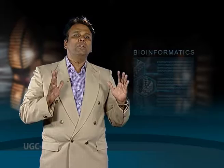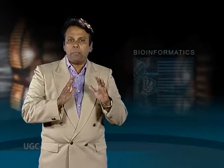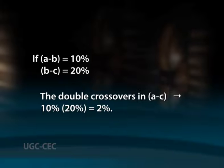If three genes have an order A, B, C and the recombination values A-B and B-C are independent of each other, then one should be able to predict the double crossover value between A and C as the product of individual values A-B and B-C. For instance, if A-B equals 10% and B-C equals 20%, then double crossovers in the A-C region would be 10% of 20%, that is 2%.